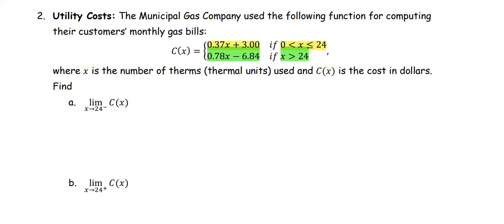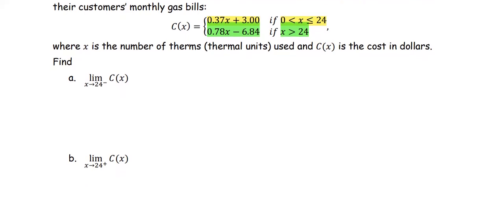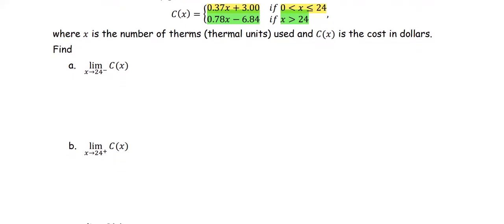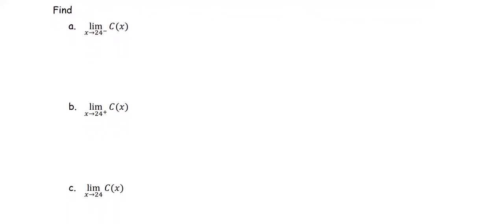In part A, we're going to find the limit of the cost function as x approaches 24 from the left. In part B, we're going to find the limit of the cost function as x approaches 24 from the right. In part C, we're going to find the limit of the cost function as x approaches 24. Parts A and B are one-sided limits, and part C is the two-sided limit.